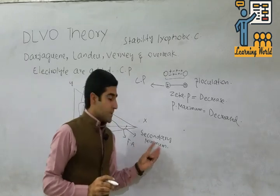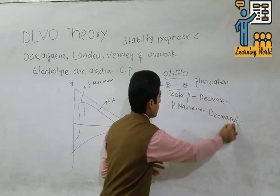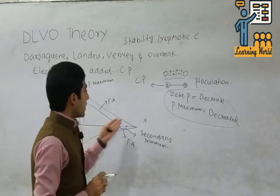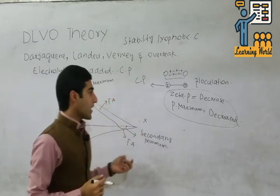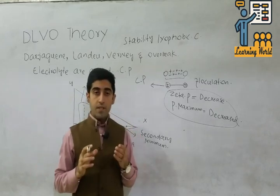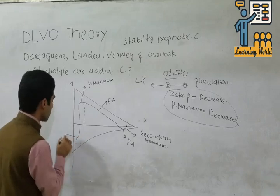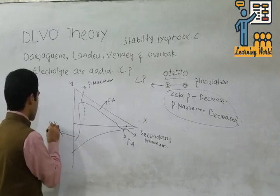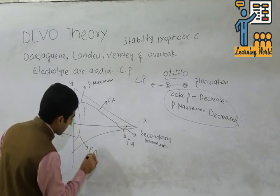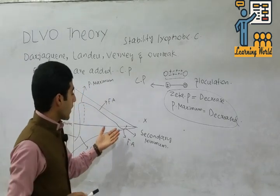During the secondary minimum, the zeta potential is decreased and the primary maximum is also decreased. With the passage of time the electrolyte will be absorbed, the force of repulsion occurs, and the phenomena repeats. The surface orbitals will form a bond with each other, the force of attraction again occurs, and they will reach the primary minimum — this is the force of attraction.